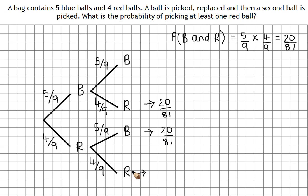And then we've also got this branch here which is four ninths times four ninths. So four times four is 16, divided by nine times nine is 81.